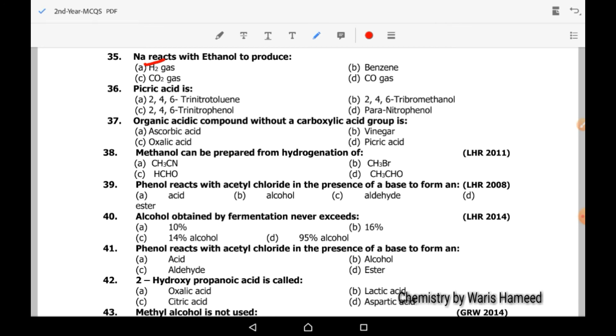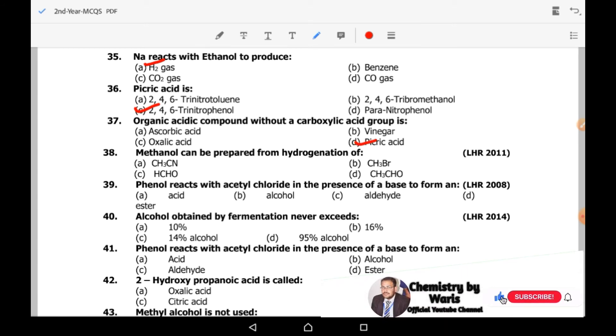Picric acid is actually phenol. 2,4,6-trinitrophenol is picric acid. Organic acidic compound without a carboxylic acid group is picric acid. It is actually substituted phenol.